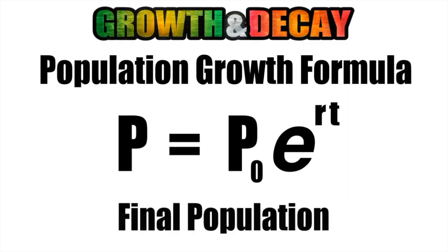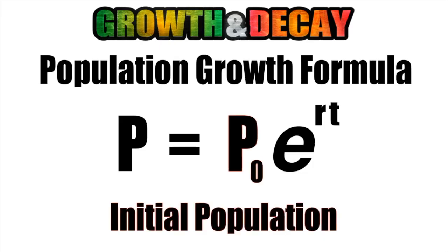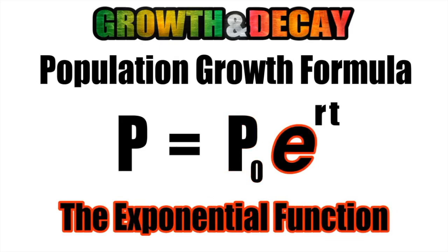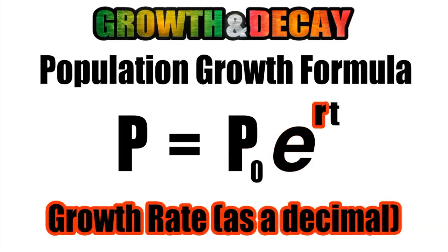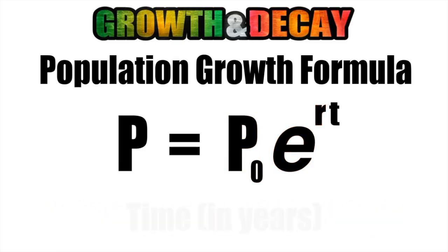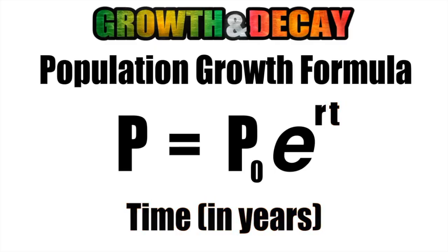Where P represents the final population, P sub zero represents the initial or starting population, e just represents the exponential function, r represents the growth rate, which we have to express as a decimal, and t represents the time in years.